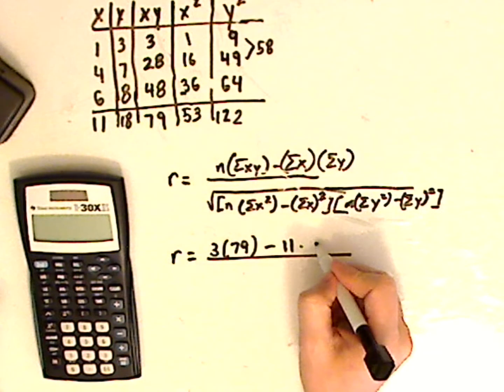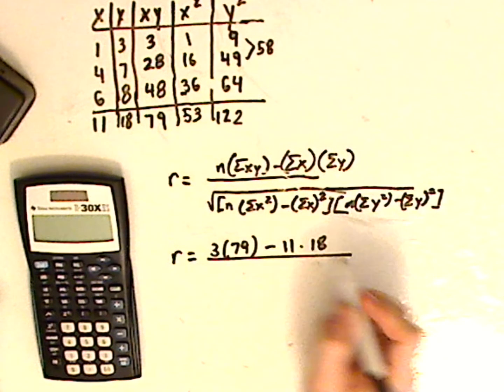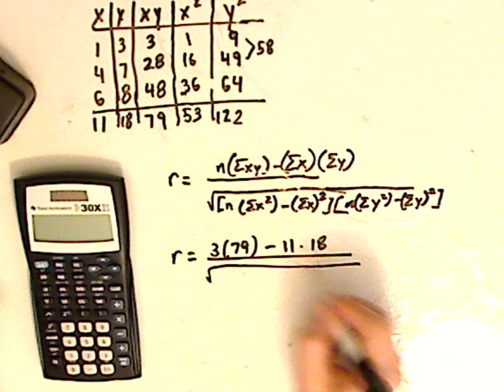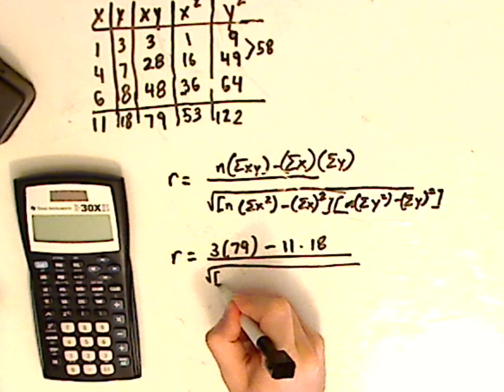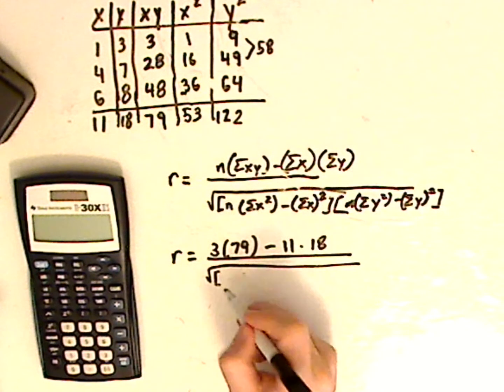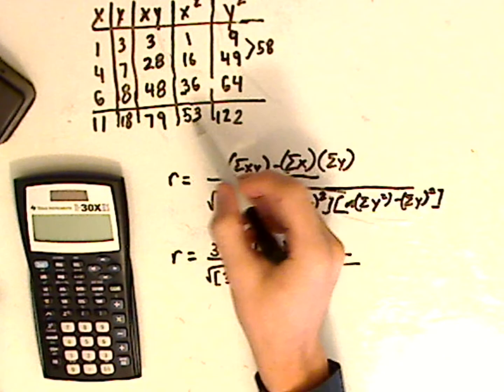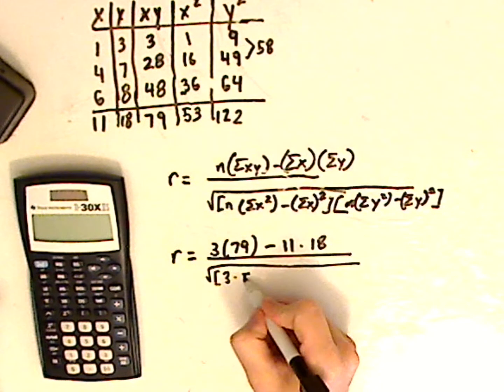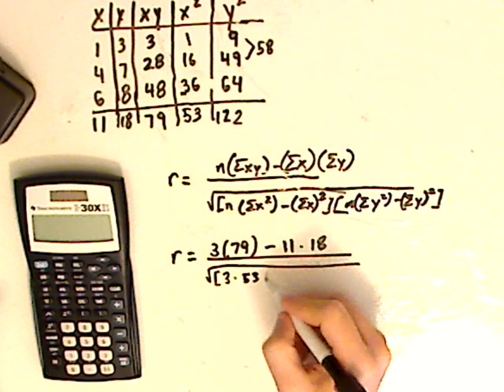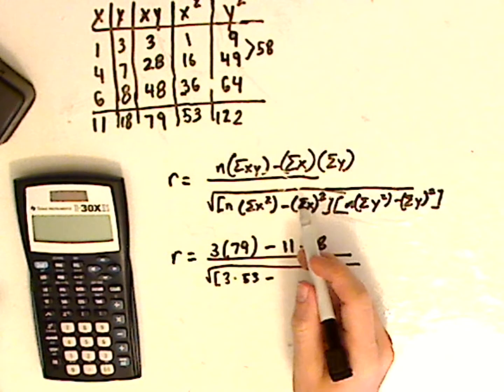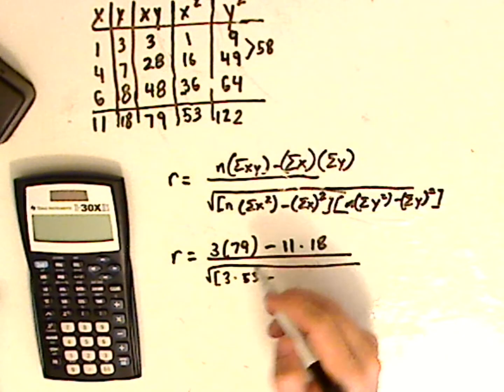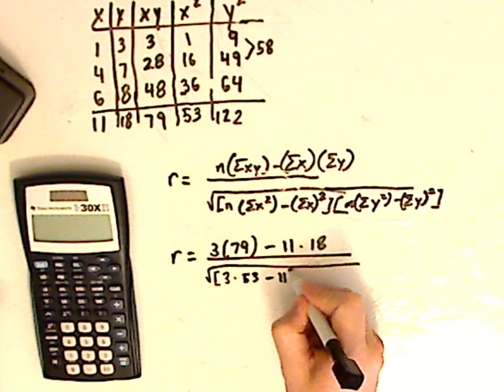And I have summation of y, which is 18. Under square root, don't forget your bracket, so it's 3, times the summation of x squared, which is 53. Minus the summation of x squared, so it's 11 squared.